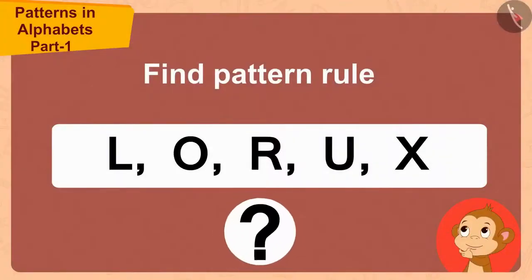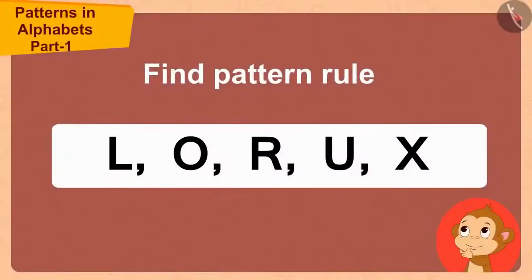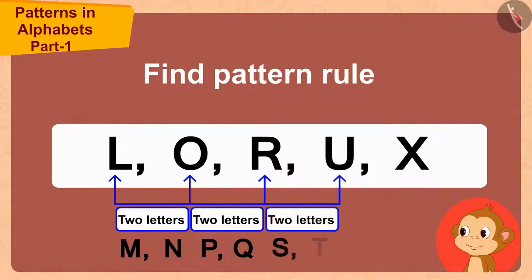Children, can you help Babban in finding the rule of this pattern? If you want, you can stop the video and find the answer. The first letter of this pattern is L and the second letter is O. So, the difference between these letters L and O is of two letters. And how many letters difference is there between these letters O and R? Exactly, two letters. Thus, the rule of this pattern is the difference of two letters between each letter and the letter preceding it.